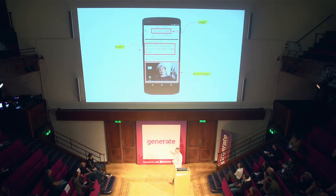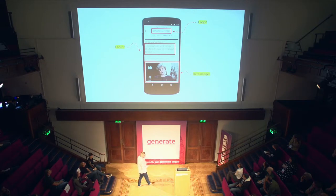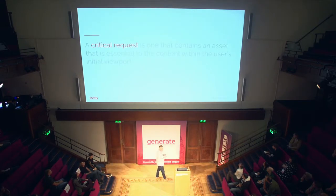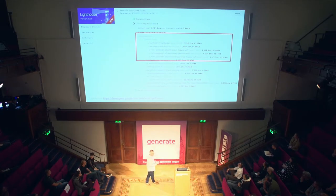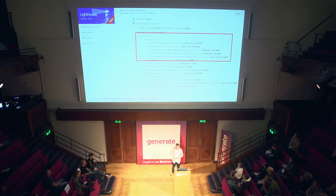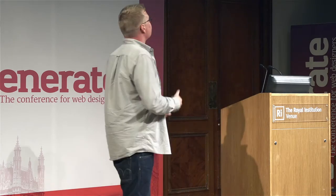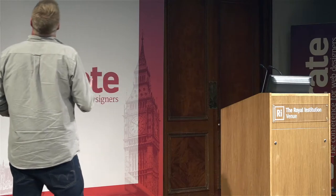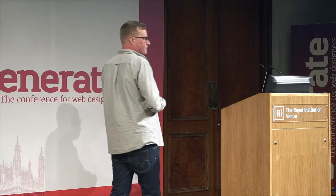Let's do that exercise for the FT. Is it the logo? Is it the fonts? It's definitely the fonts. Is it the hero image? A critical request is one that contains an asset essential to the content within the user's initial viewport — it directly correlates to our first meaningful paint. Lighthouse has our back here — you can ask it for your critical request chain and automate this process. For the FT, the critical request chain is the hamburger icon, the logo, and three font files. Just for that first viewport experience — this is crazy.